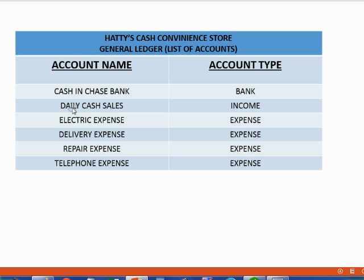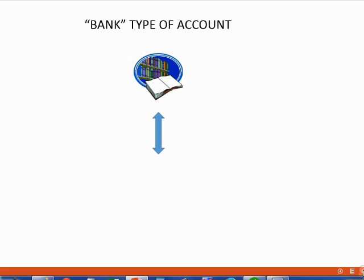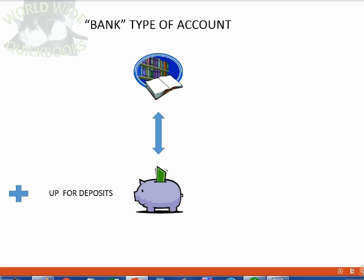When QuickBooks adds an account, it's mostly in lowercase. So using capital letters makes it easier to see which accounts we added versus which QuickBooks added. The account type we choose determines how the account will behave and what financial statement it will appear on. For example, Cash in Chase Bank needs to be set as a bank type. When QuickBooks knows it's a bank type, it knows to use that account when you open the deposit window — not delivery expense or daily cash sales.